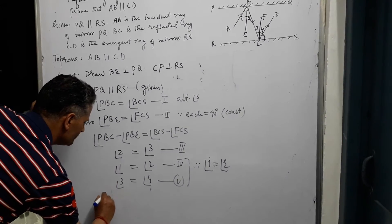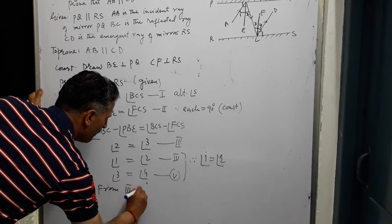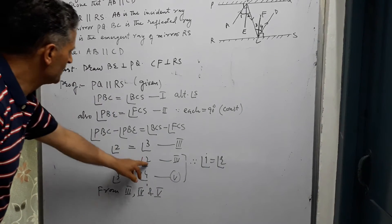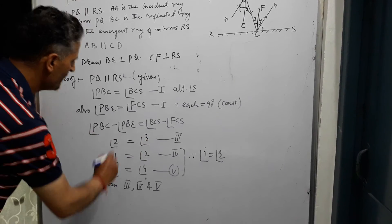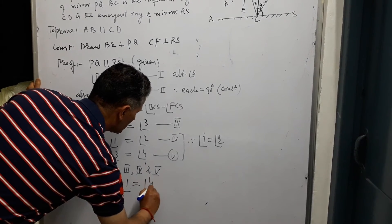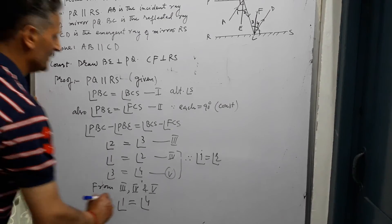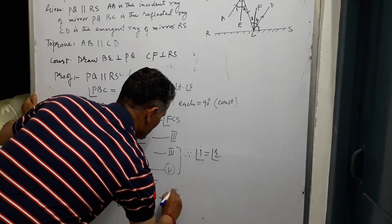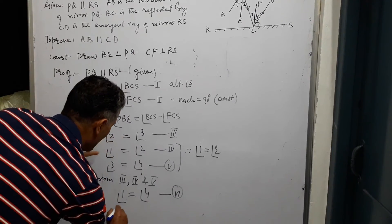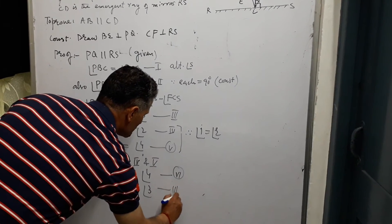From equations 3, 4, and 5: since angle 1 equals angle 2 and angle 3 equals angle 4, and angle 2 equals angle 3, we can cancel angle 2 and angle 3 to get angle 1 equals angle 4. This is equation number 6. And equation 3 gives angle 2 equals angle 3.